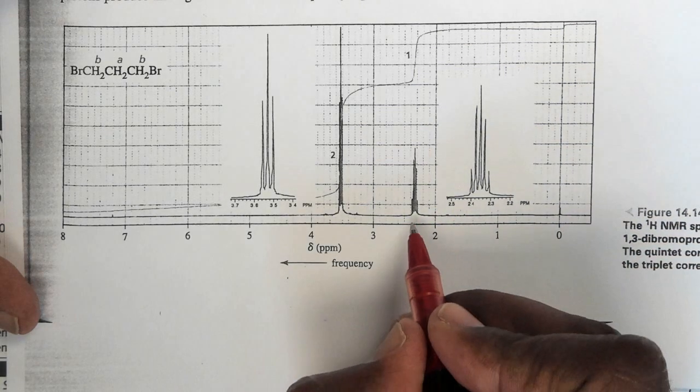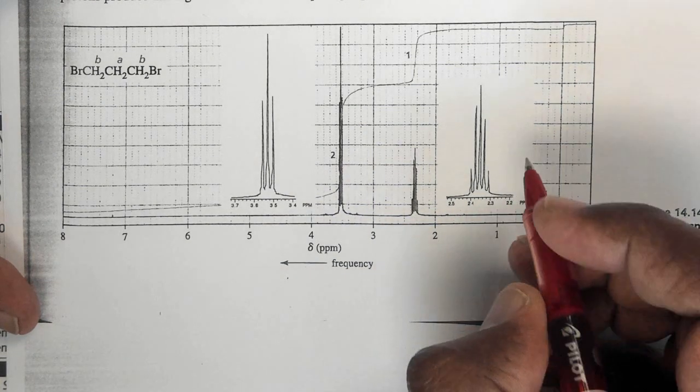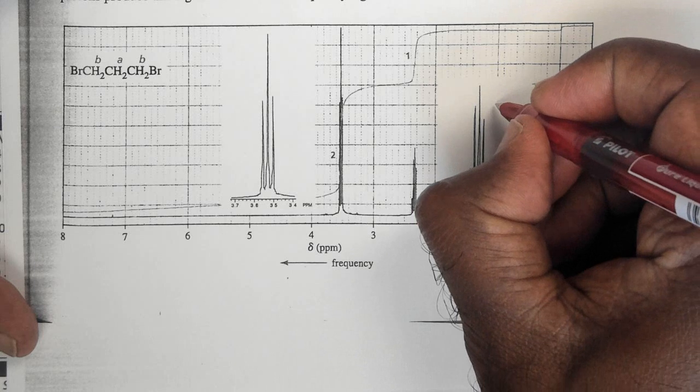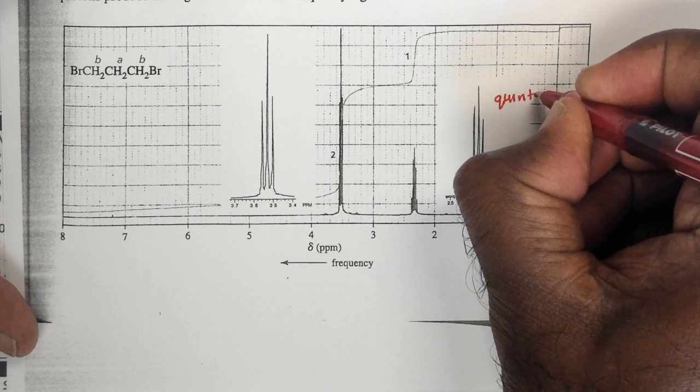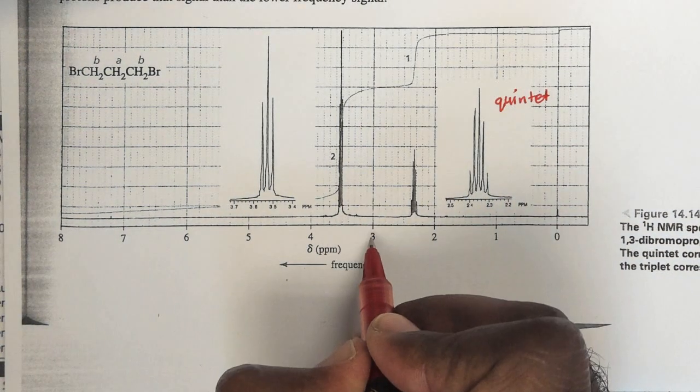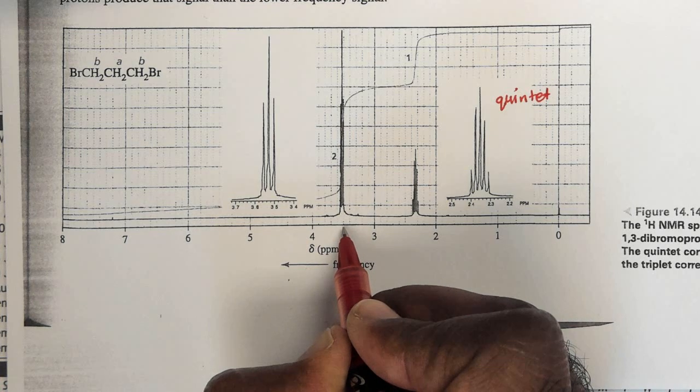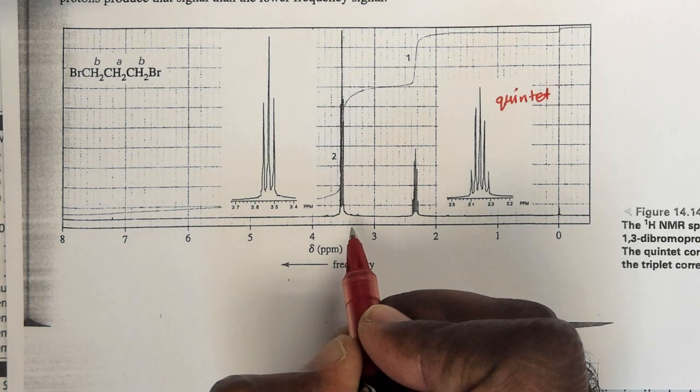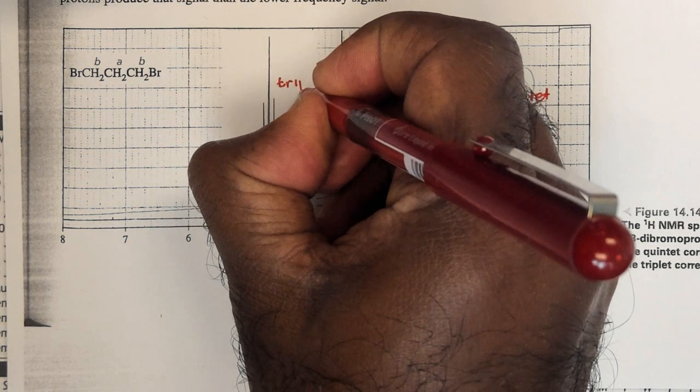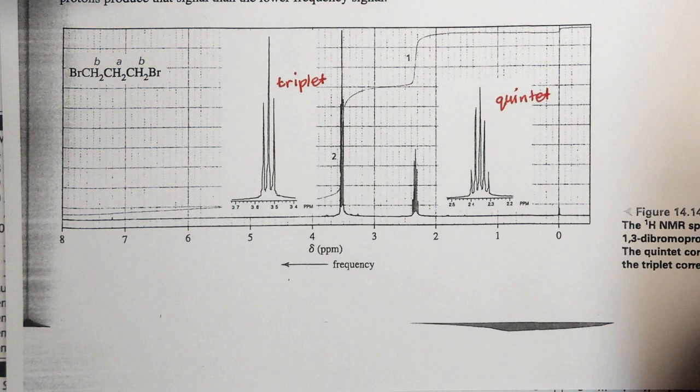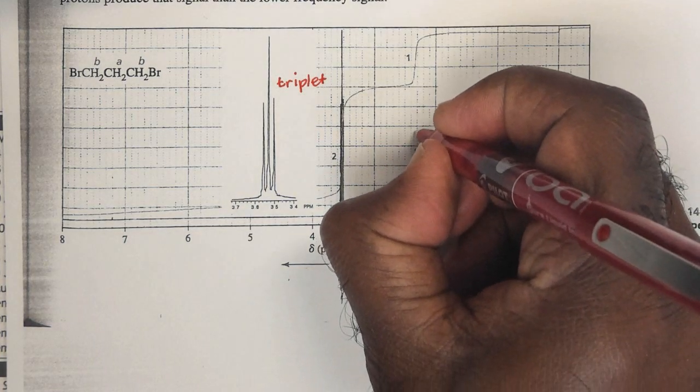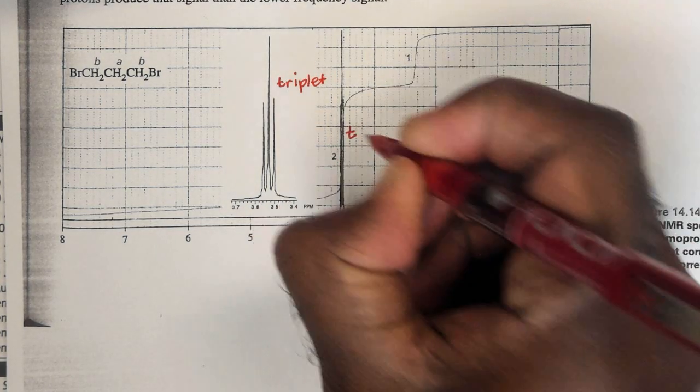We have two resonances at 2.2. We see it very clearly here. If we look, we see 1, 2, 3, 4, 5 lines, and these 5 lines is a quintet. We also look at around 3.5, and this is 1, 2, 3, a triplet. So you've got a triplet and a quintet with these two resonances.